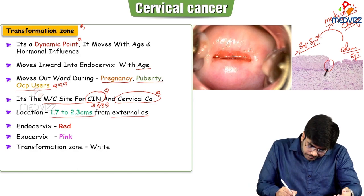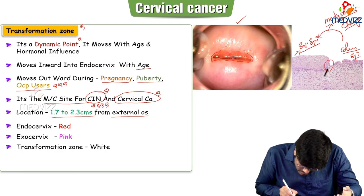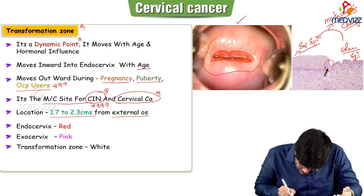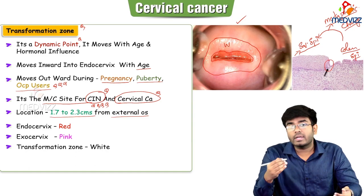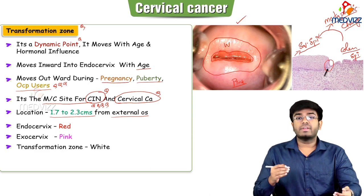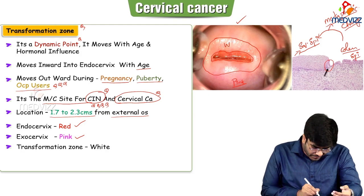From this image, you can see a red color area — that is the endocervix. Surrounding the endocervix, there is a pale white color area — that is the squamocolumnar junction or transformation zone. Surrounding the white region, you have a pink color area — that is your exocervix. The pinkish region is the exocervix, the endocervix is more reddish, and the transformation zone is pale white.